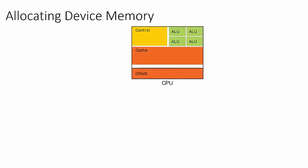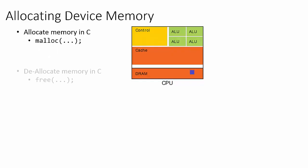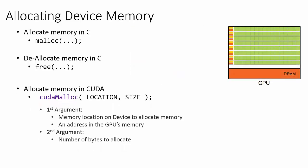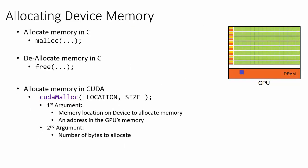Allocating device memory is analogous to allocating memory in C. Recall that in C the function to allocate memory is malloc, and the function to deallocate memory is free. Analogously, to allocate memory on the device we use cudaMalloc, which takes two arguments: the first is the memory location on the device we want to allocate, and the second is the size of the memory region. To deallocate memory on the device, we use cudaFree, similar to C's free function.